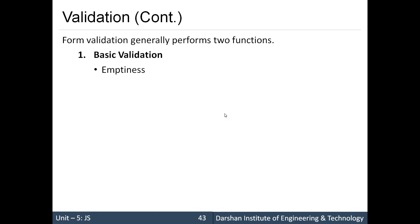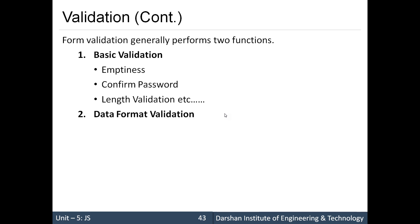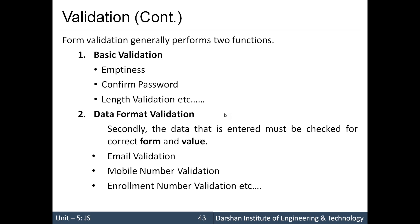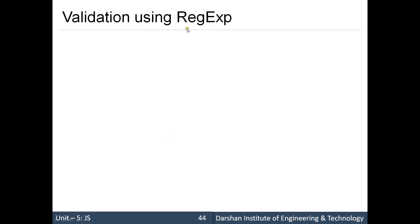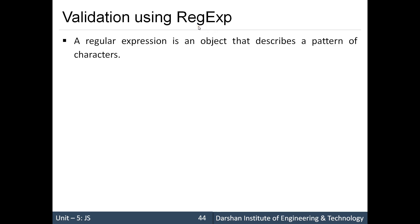There are two different types of validation. The first is basic validation, which covers emptiness check, confirm password, length validation, and many others. The second is data format validation, which is focused on the format of the data — such as email validation, mobile number validation, enrollment number validation, or date of birth in dd/mm/yyyy format. Basic validation can be checked with basic JavaScript operators or functions, whereas data format validation requires a class in JavaScript called RegExp — Regular Expression.